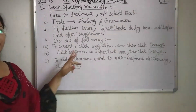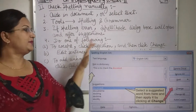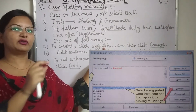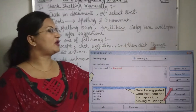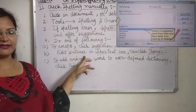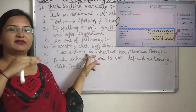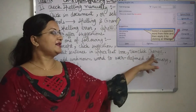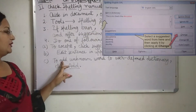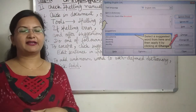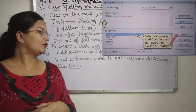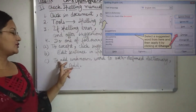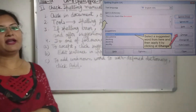In the spell check dialog box, you have to do one of three things. First, if you want to accept a suggestion, click any word from the suggestions list and then click the Change button. Second, you can edit the sentence directly in the upper text box and then click Change. Third, if you feel the flagged word is actually correct, you can add it to the custom dictionary by clicking the Add button.